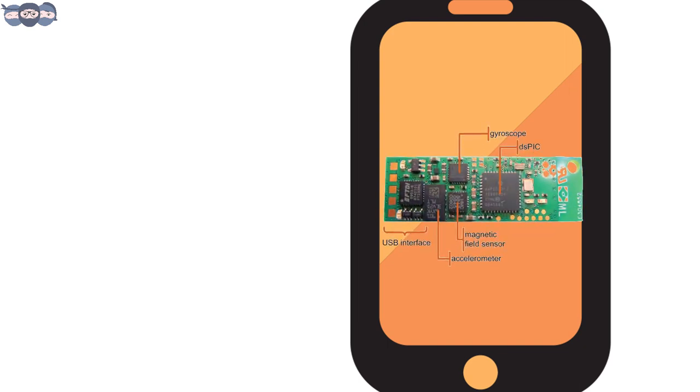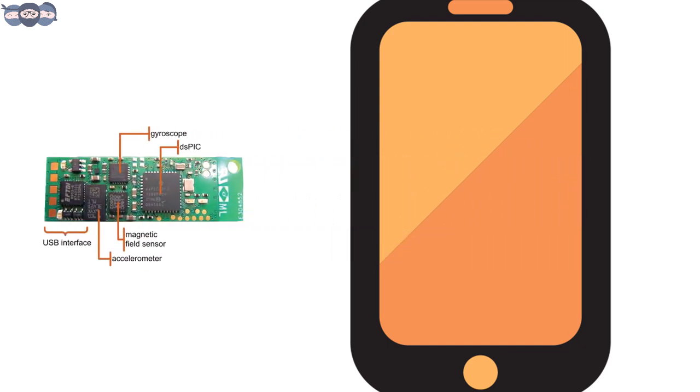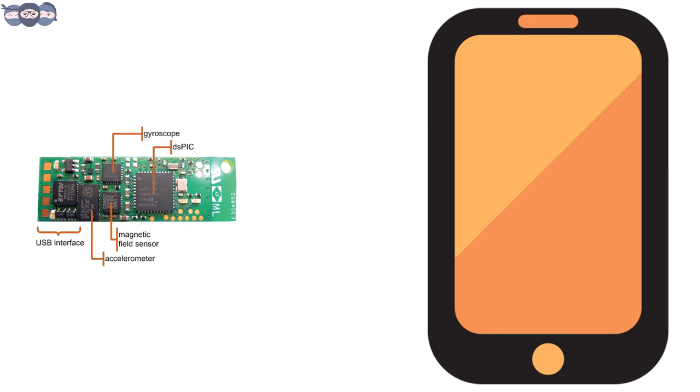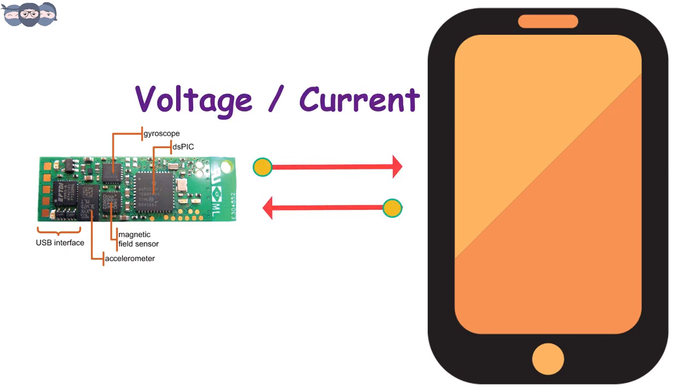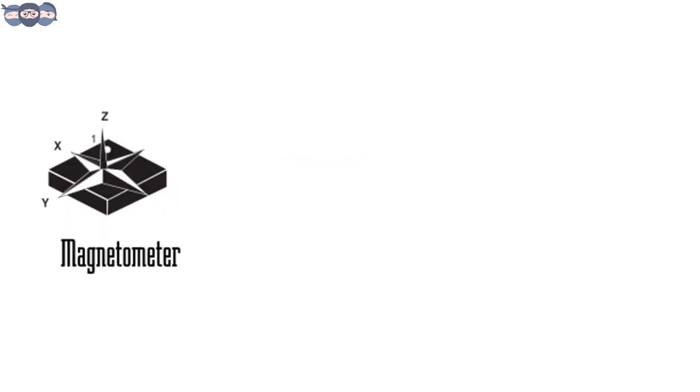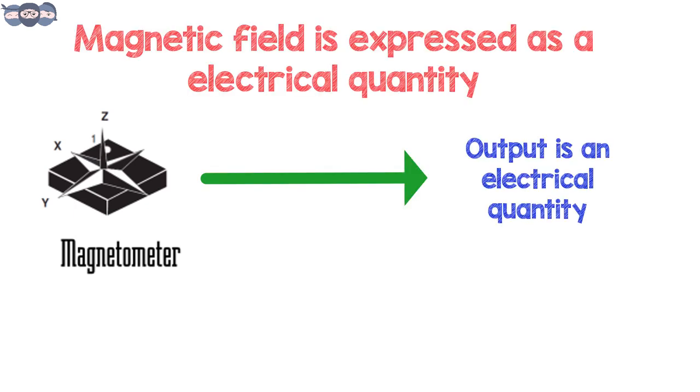Many of the smartphones are equipped with a magnetometer to detect the directions. The smartphone is an electronic device and communicates with its sensors using electrical quantities like voltages or currents. So, it is required that the magnetometer output the value of magnetic field in terms of voltage or current.